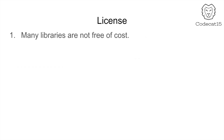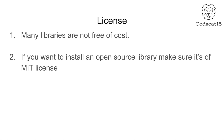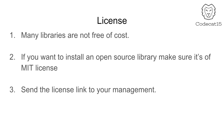Now let's talk about licenses. Many libraries that we see on GitHub may not actually be free, and hence there can be a cost associated with them. In order to know whether the library is free or not, the best thing to check is the licensing option — see if the license is an MIT license. If you want to add only open source libraries in your project, make sure their license is MIT. As a standard practice, I would advise sending the license link to your management. Let me go ahead and show it to you.